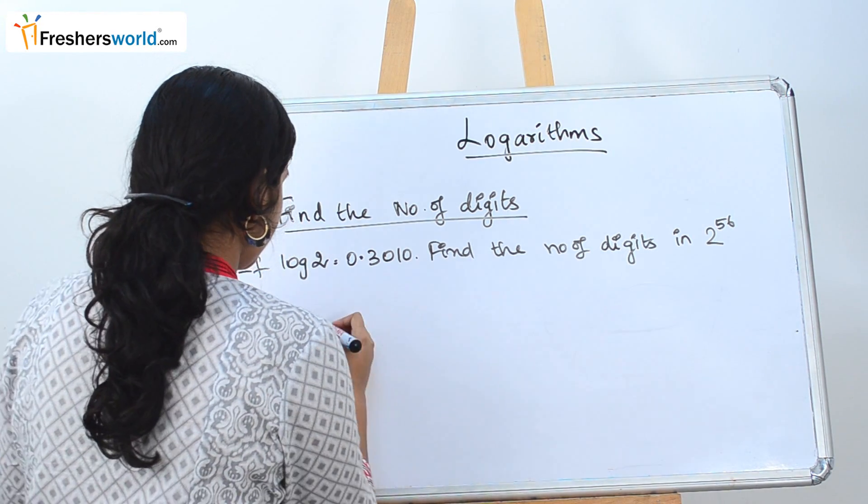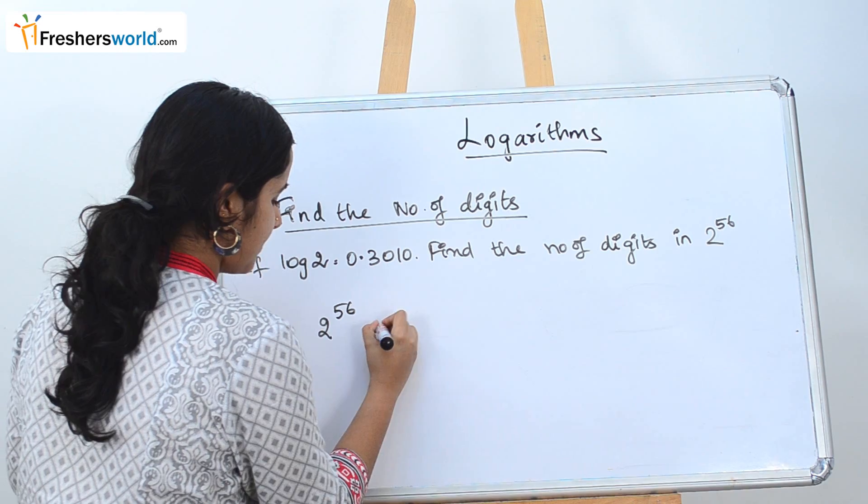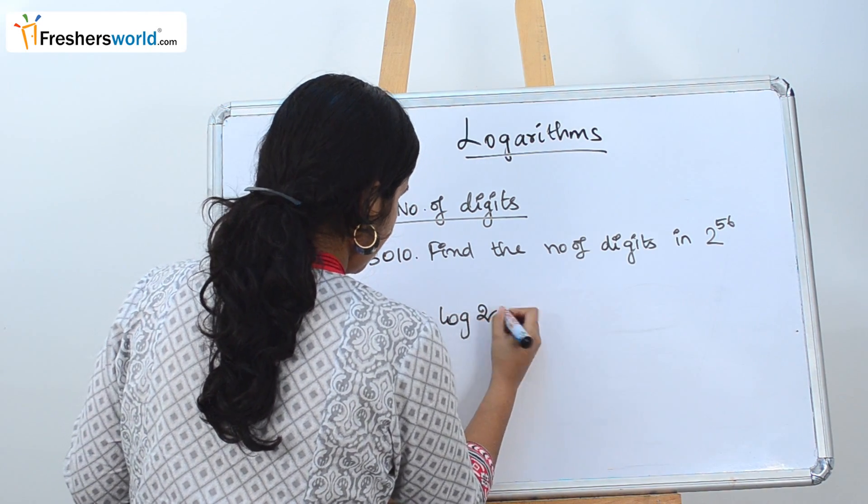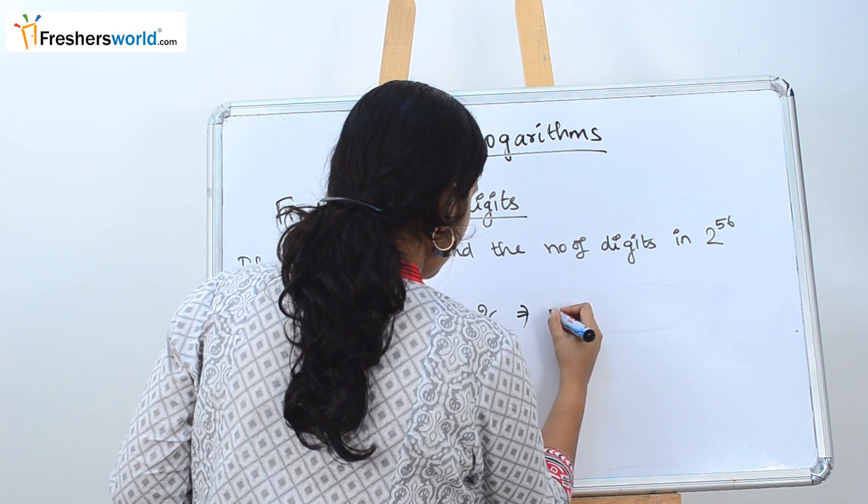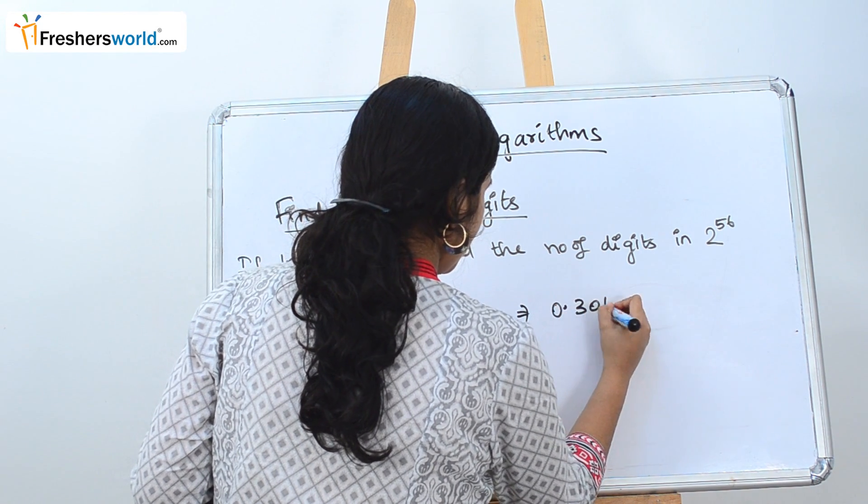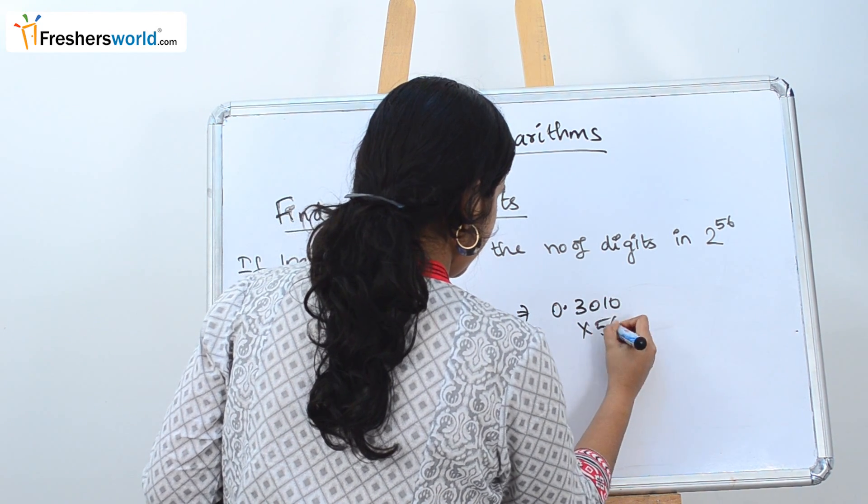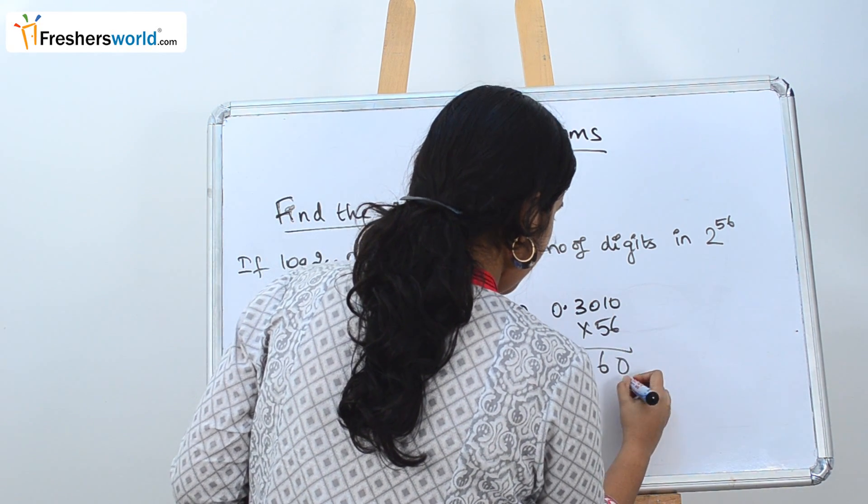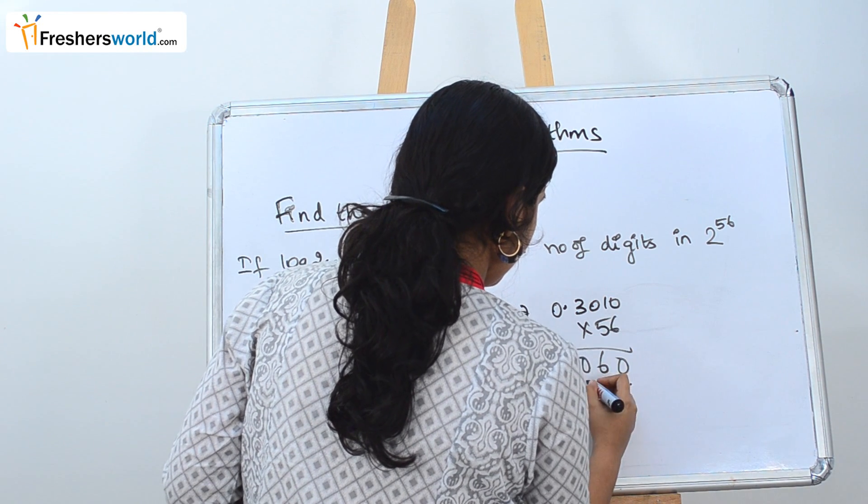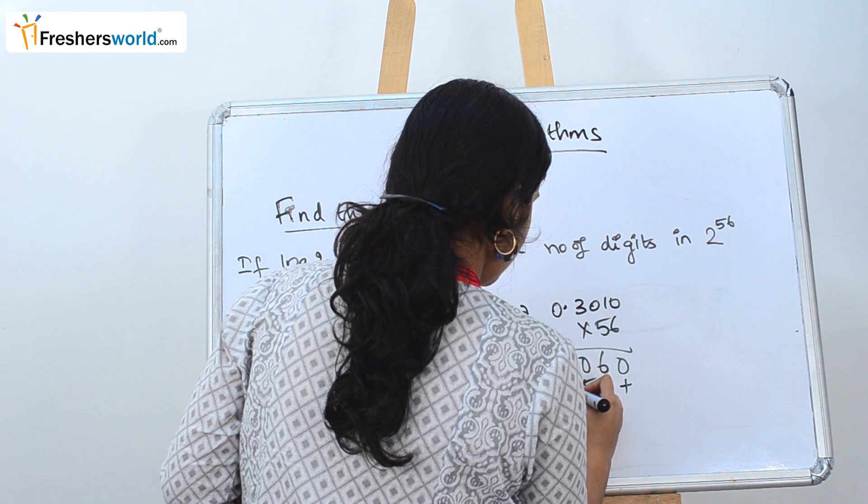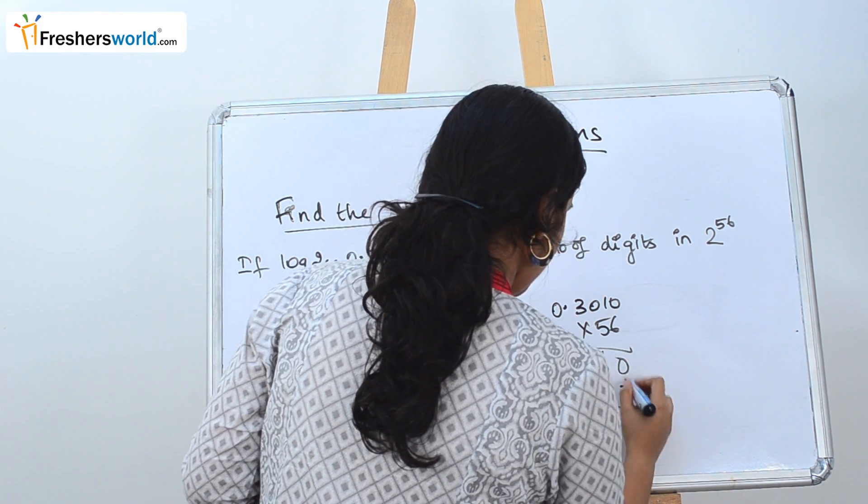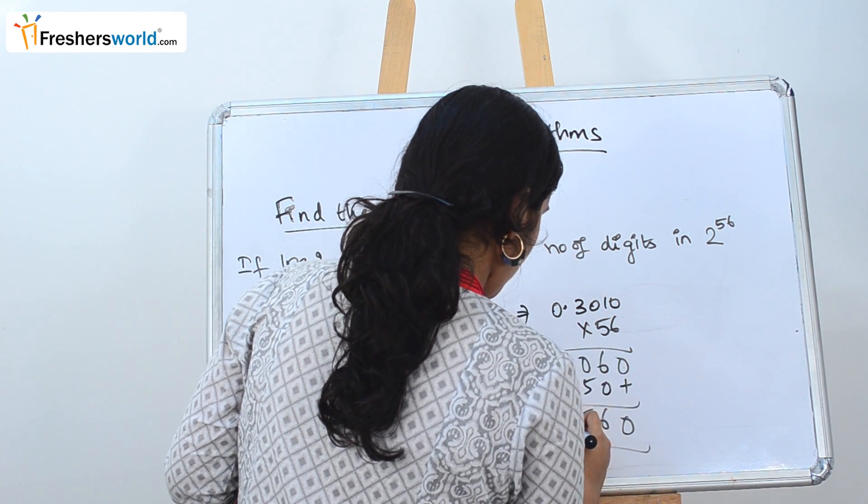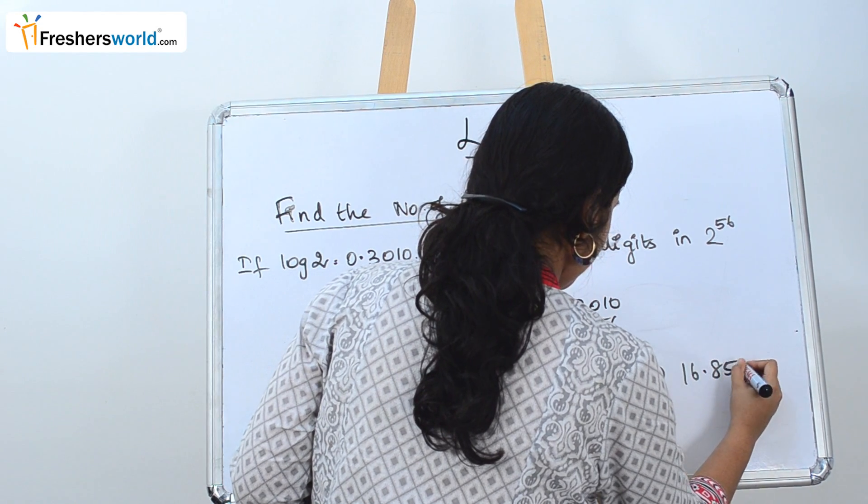The question that they have given is 2 to the power 56. So how can 2 to the power 56 be rewritten? It can be rewritten as 56 log 2. Log 2 value is 0.3010 into 56, which gives us 16.856.